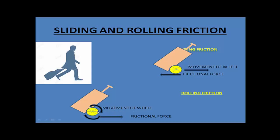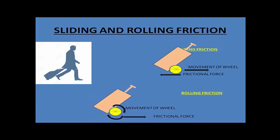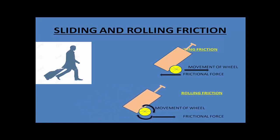Now if you have good, serviceable wheels that rotate freely, you can pull or push your suitcase very easily. The suitcase moves fast because in this case there is rolling friction acting. This rolling friction is much less than the sliding friction, and that is why the suitcase moves much more easily.